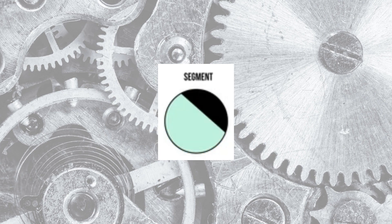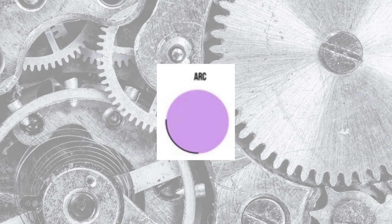Segment is the region enclosed by a chord and an arc. It also have minor segment and major segment. Arc is part of the circumference. Like the sector and segment, arc have minor arc and major arc.